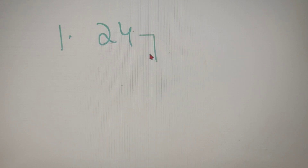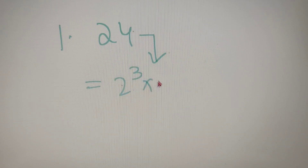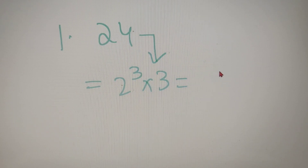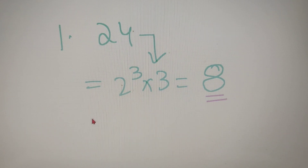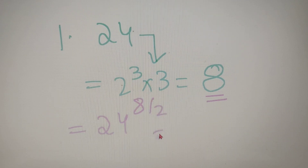For our first example, we have to calculate the product of factors of the number 24. First, we will prime factorize the number to calculate the number of factors. 24 on prime factorization gives the result as 2 to the power 3 into 3. So the number of factors of 24 is equal to (3+1)(1+1), which is equal to 8. Therefore, the product of factors of 24 is 24 to the power 8 by 2, which is equal to 24 to the power 4.